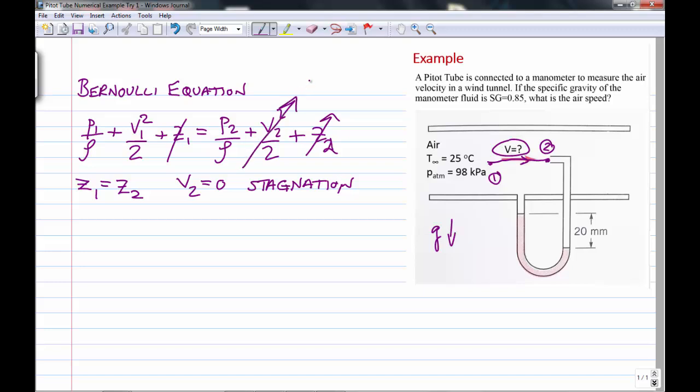So we can cross out that term. So now we can solve, this is a very, quite a simple example, we can solve for V1. And it's going to equal 2 P2 minus P1 upon rho, and then all of that under the square root.